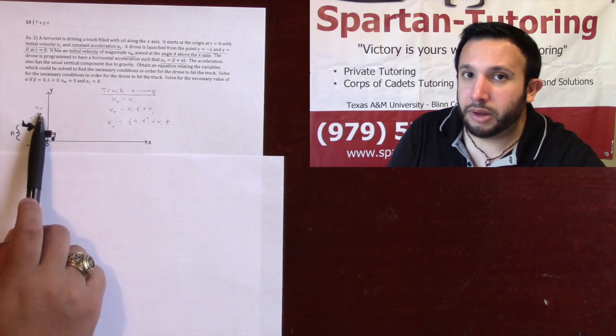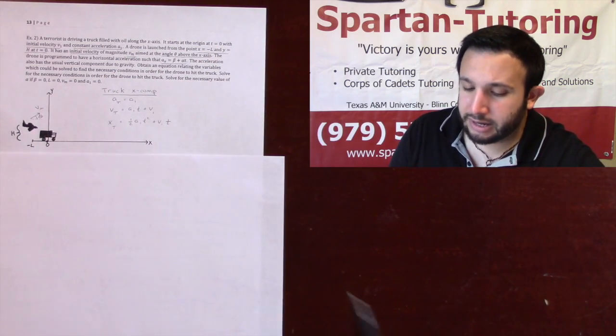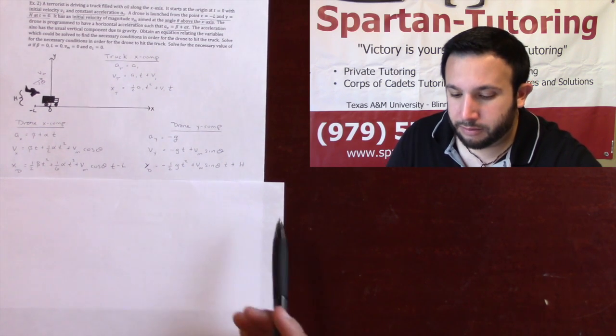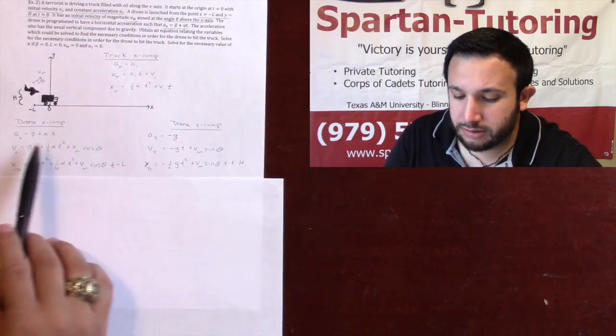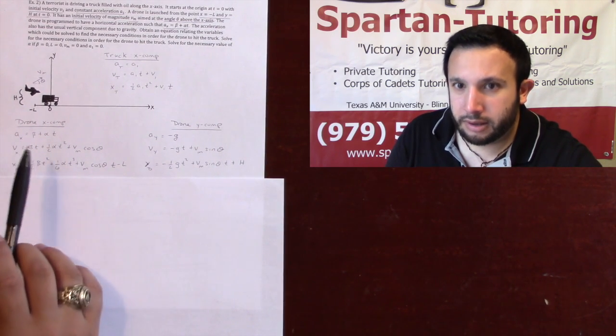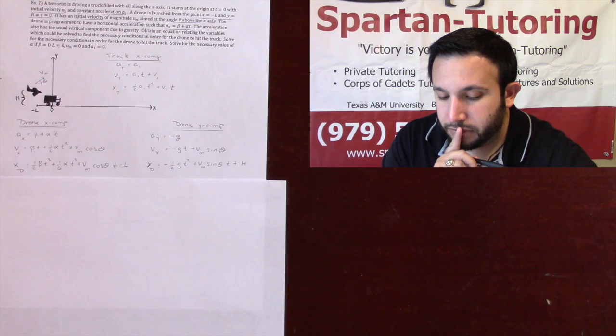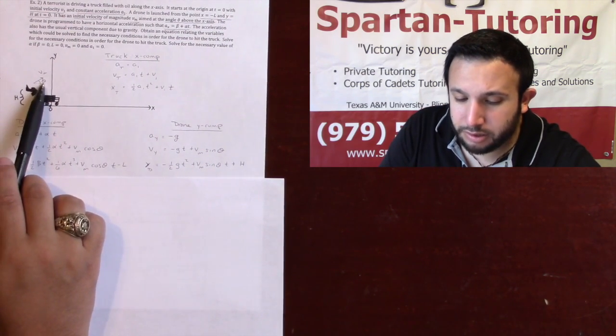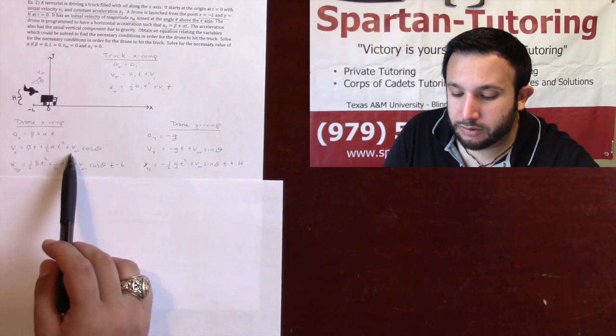Now the drone, though, the drone has an initial velocity we'll call vm at some angle theta, which means the drone is traveling in two dimensions. It's got an x and a y component. And so what we need to do with that is find the equations for the x and the y component. It told me that the x component of the drone, its acceleration is beta plus alpha t. So if I want to find velocity, integrate that. The integral of beta, beta times t, integral of alpha, one half alpha t squared plus. Now you have to be very careful here. The initial velocity, yes, is vm. However, I'm solely looking in the x direction, and the x component of that initial velocity is adjacent to that angle, which is why the x component of your initial velocity is going to be vm cosine theta.